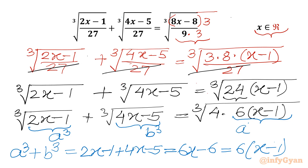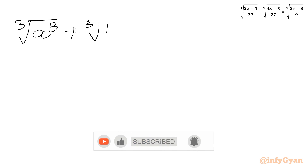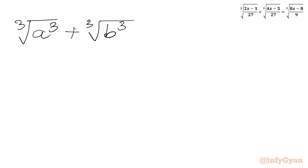So we can write a³ plus b³ equals 6(x − 1). Our equation will become: cube root of a³ plus cube root of b³ equal to cube root of 4 times (a³ + b³).